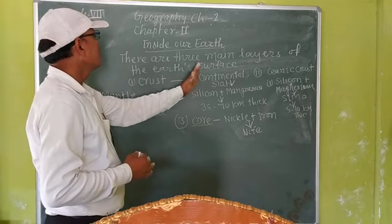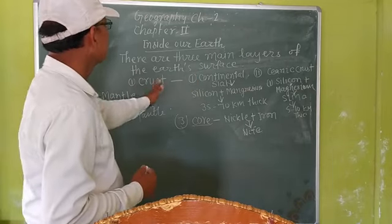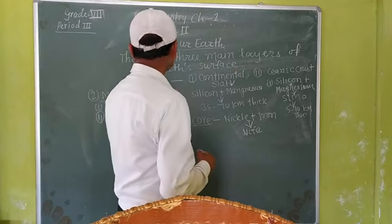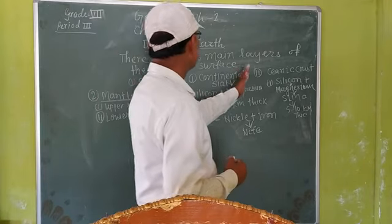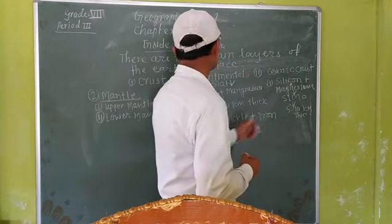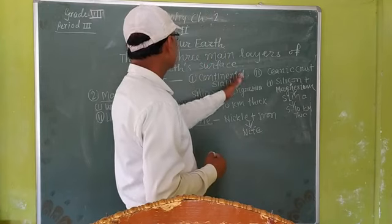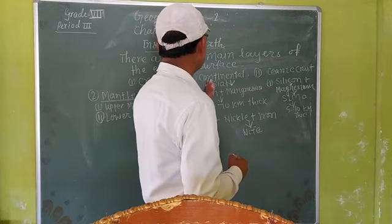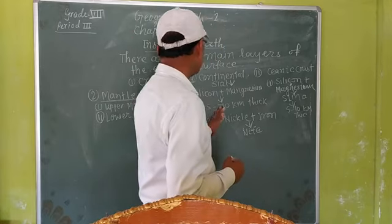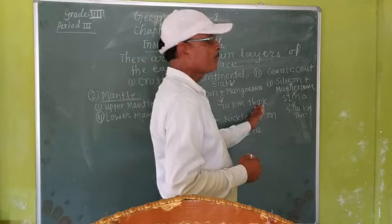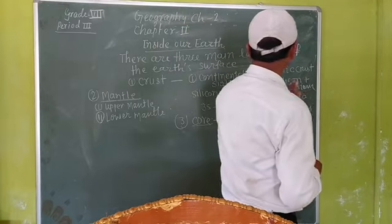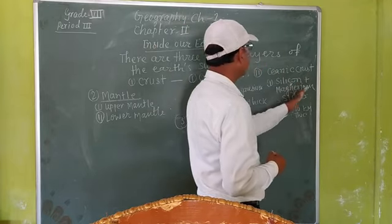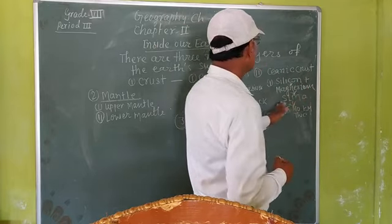There are three main layers of our Earth's surface. First, crust — which is of two types: continental crust and oceanic crust. Continental crust is made up of silicon and aluminum, that is why it is known as SIAL, and it is 35 to 70 kilometers thick. Oceanic crust is made up of silicon and magnesium, that is why it is called SIMA — S-I-M-A — and it is 5 to 10 kilometers thick.